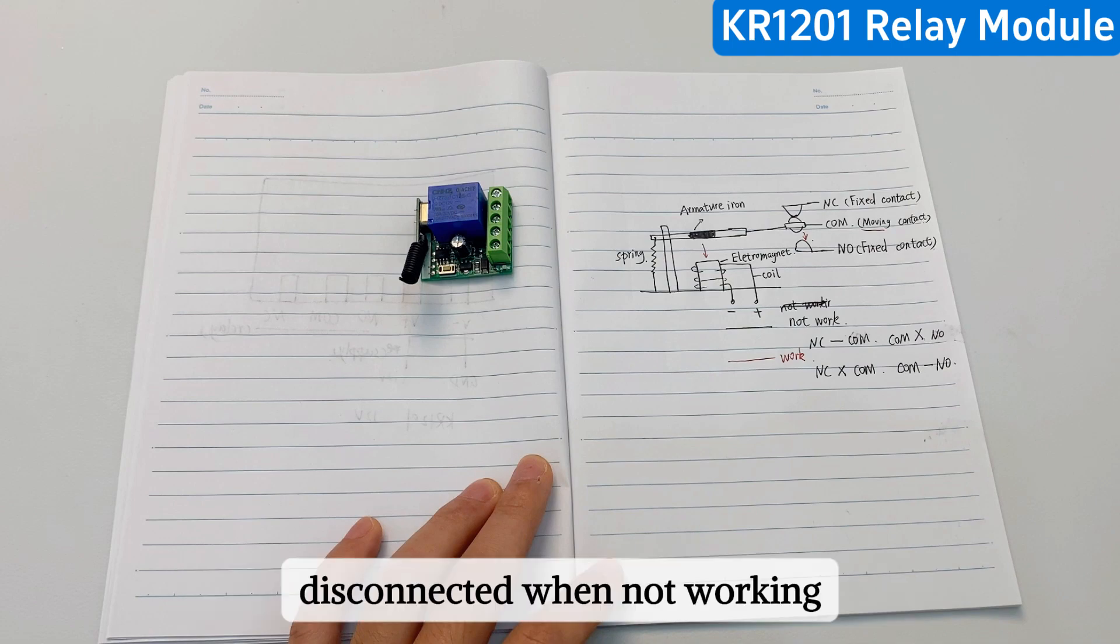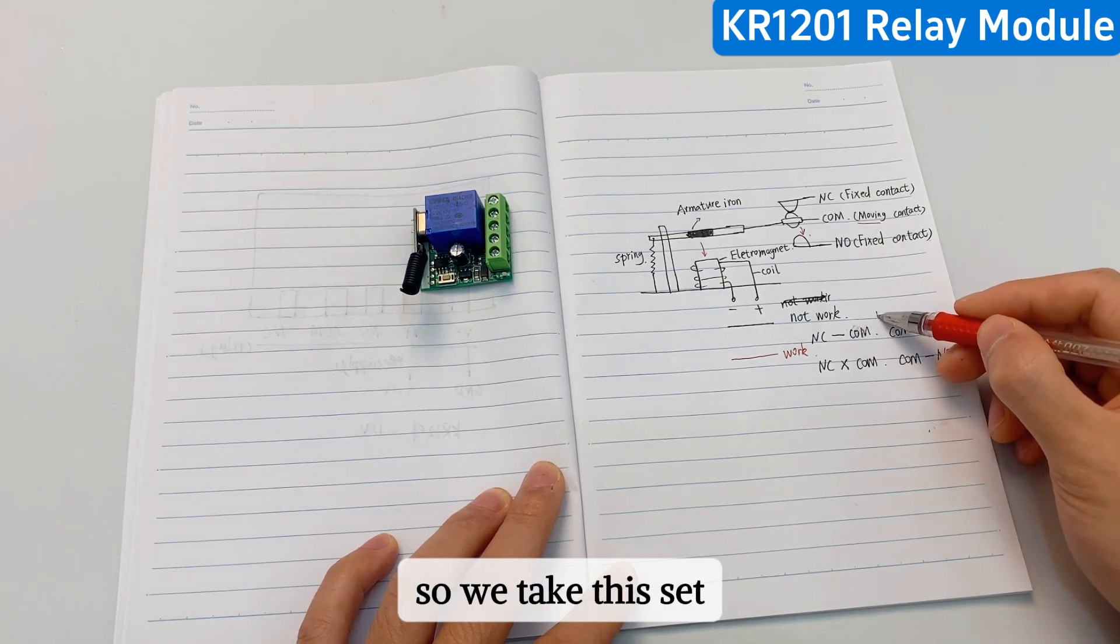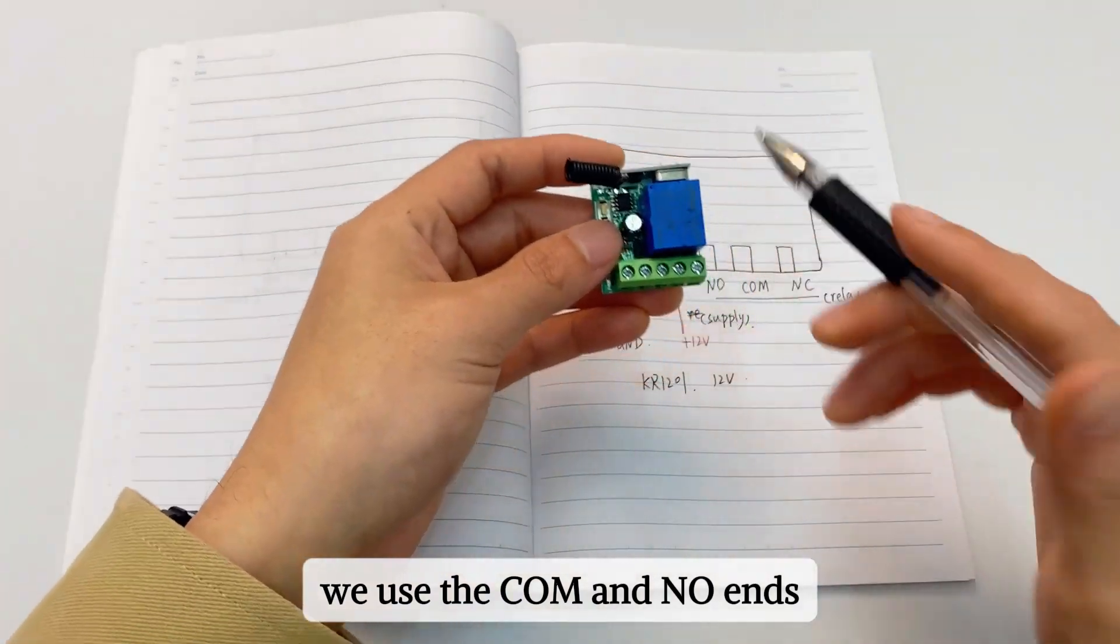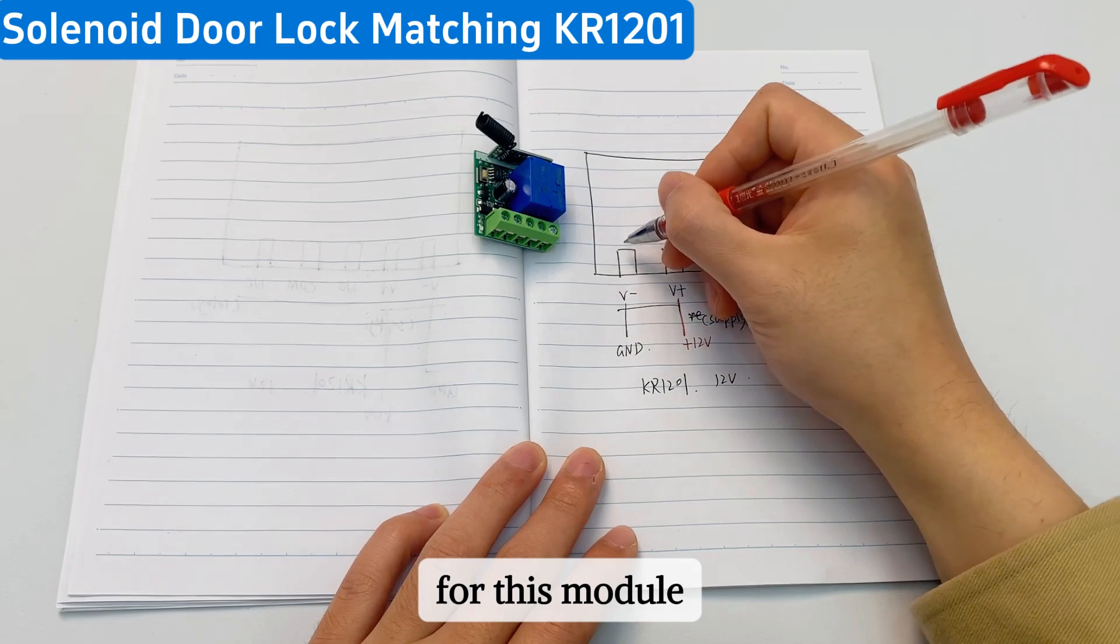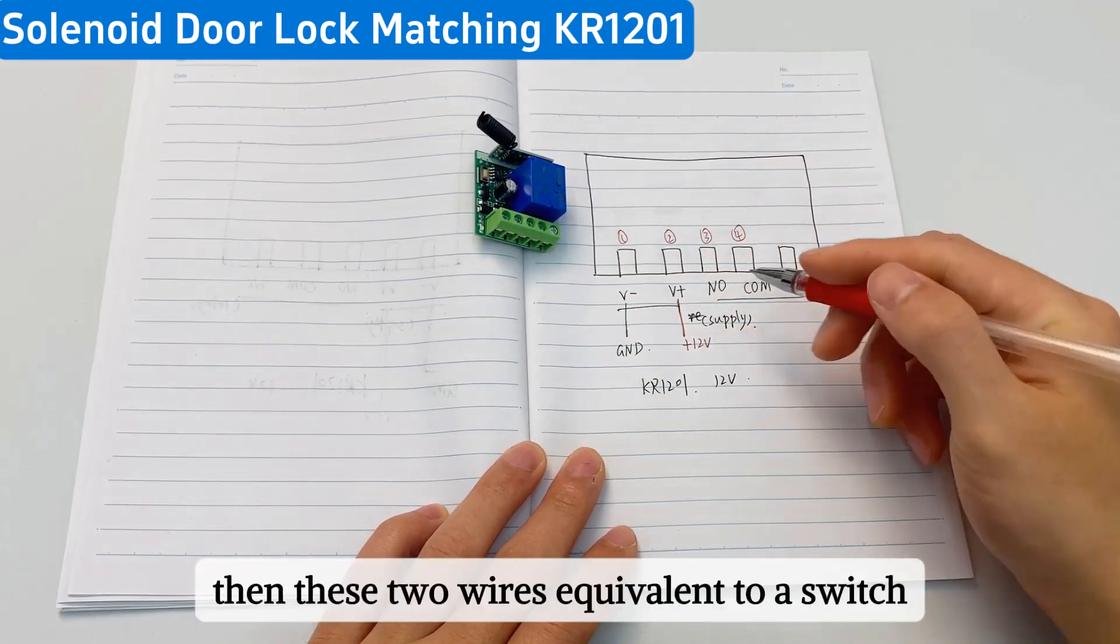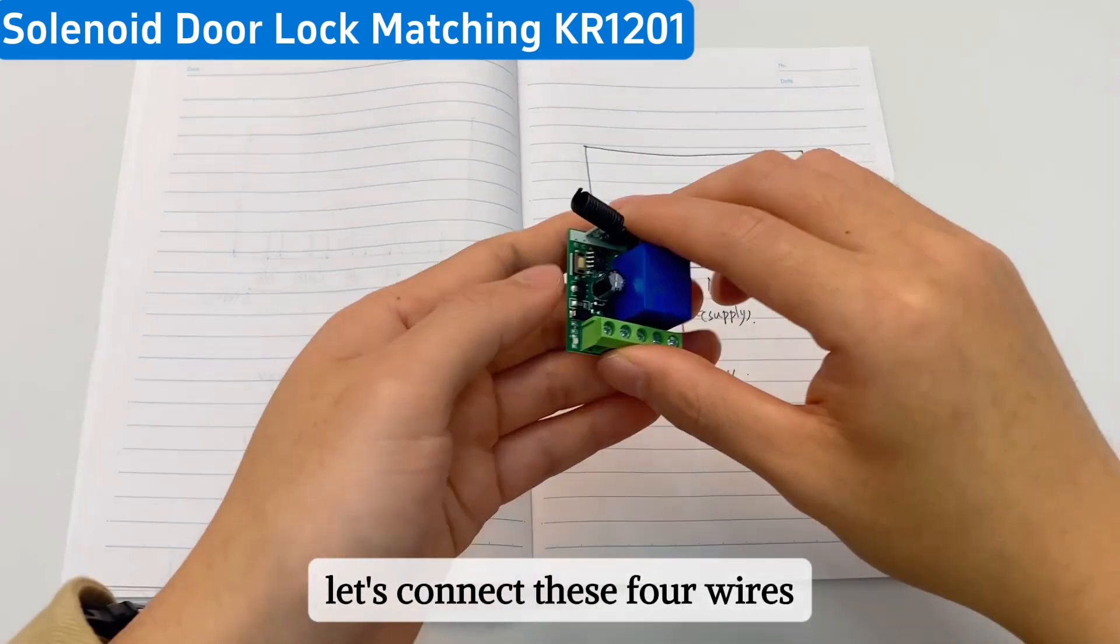Our demand is disconnected when not working, connected when working. So we take this set. We use the com and NO ends as equivalent to our manual switch. For this module, we only need to connect four wires. Then these two wires are equivalent to a switch. Let's connect these four wires.